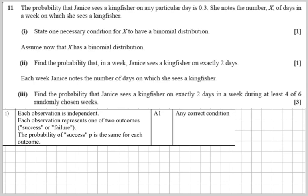Each observation is independent. Each observation represents one of two outcomes, success or failure. That's why it's called binomial, so two numbers. And the probability of success, P, is the same for each outcome.